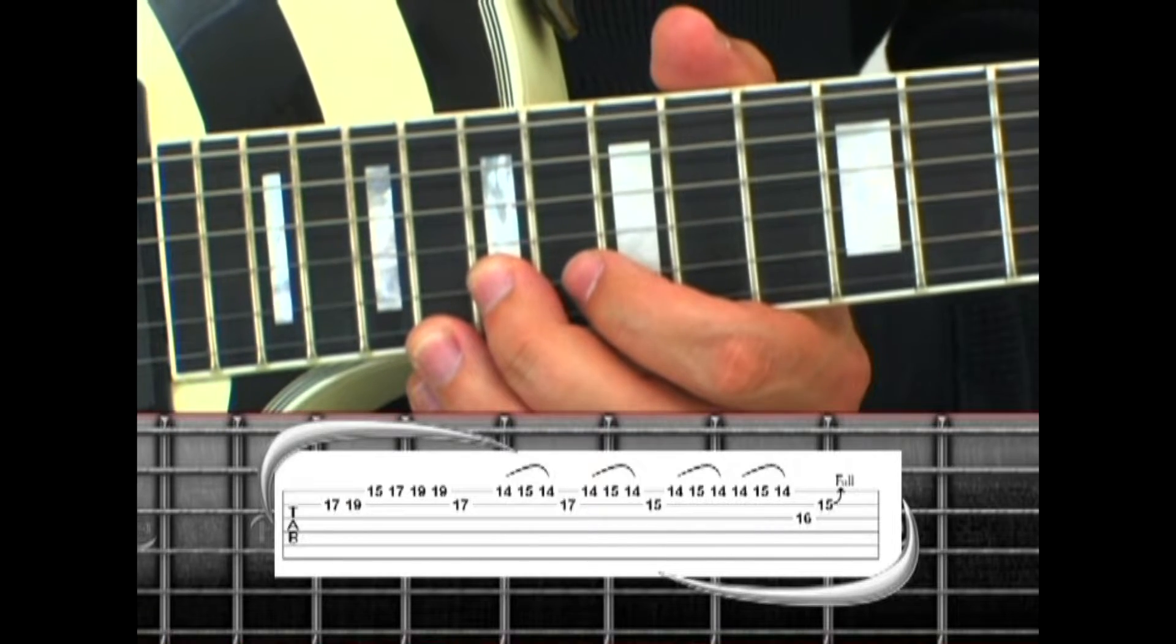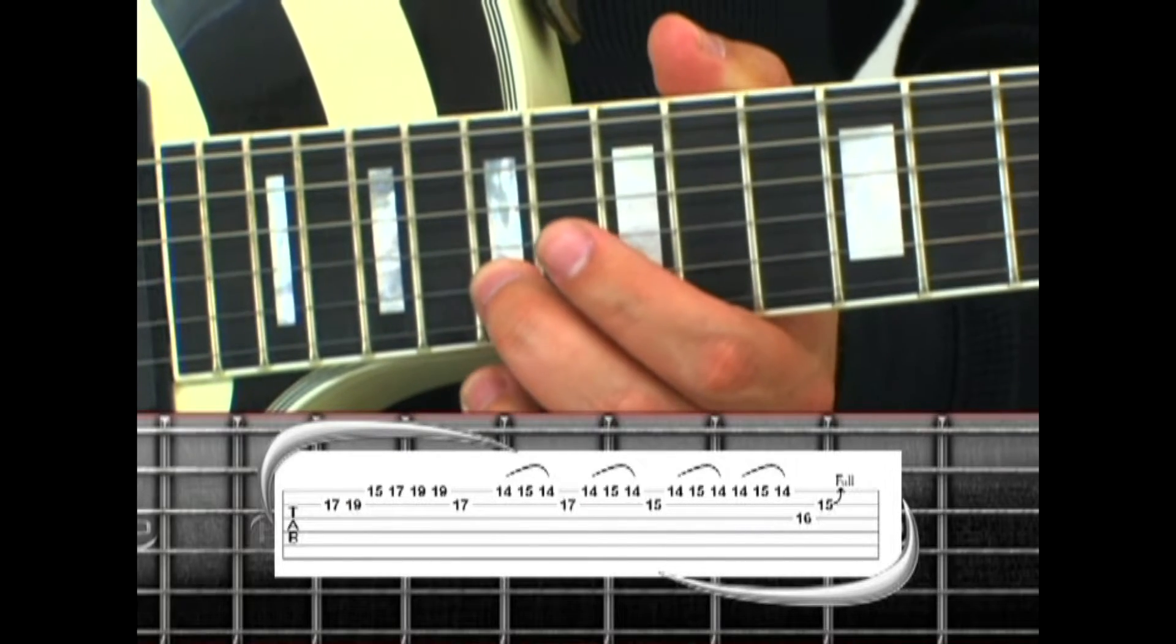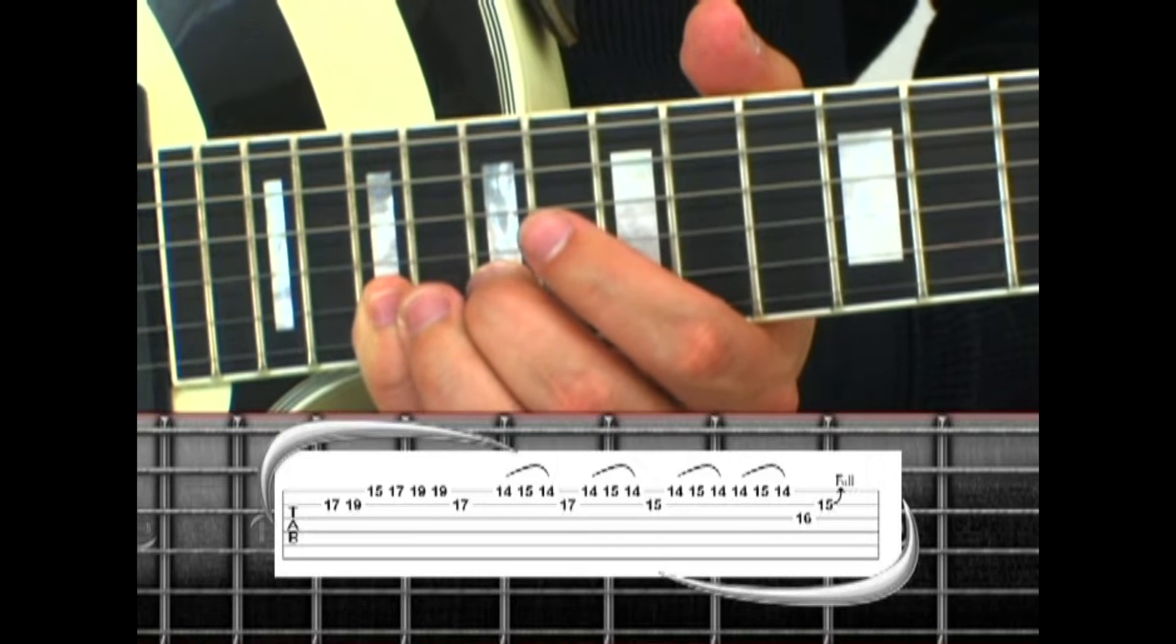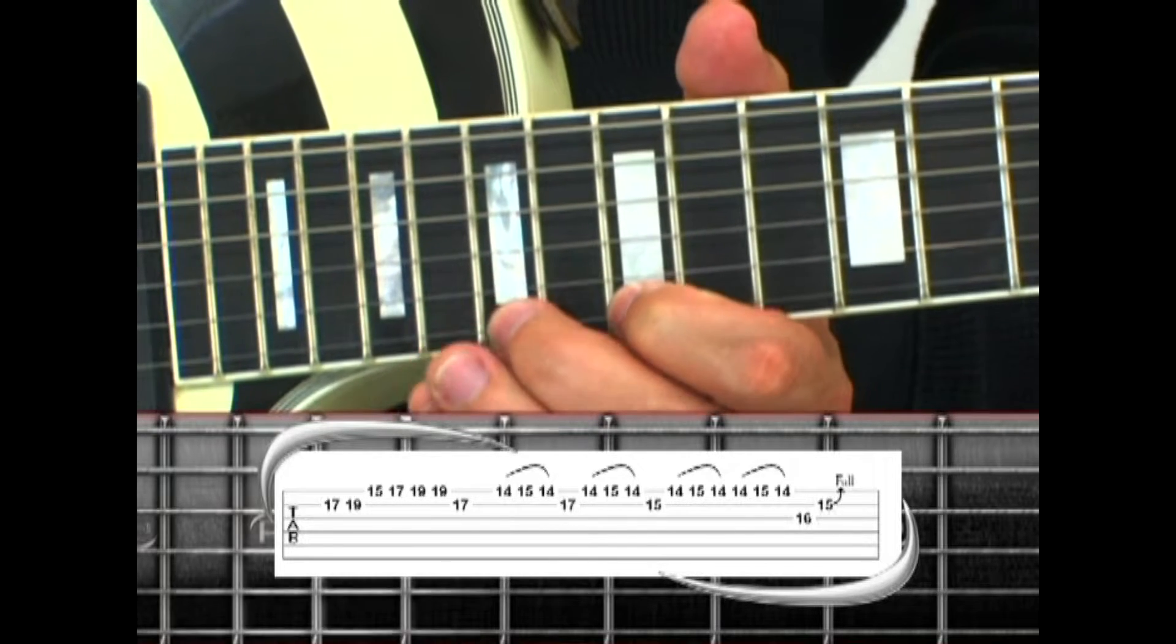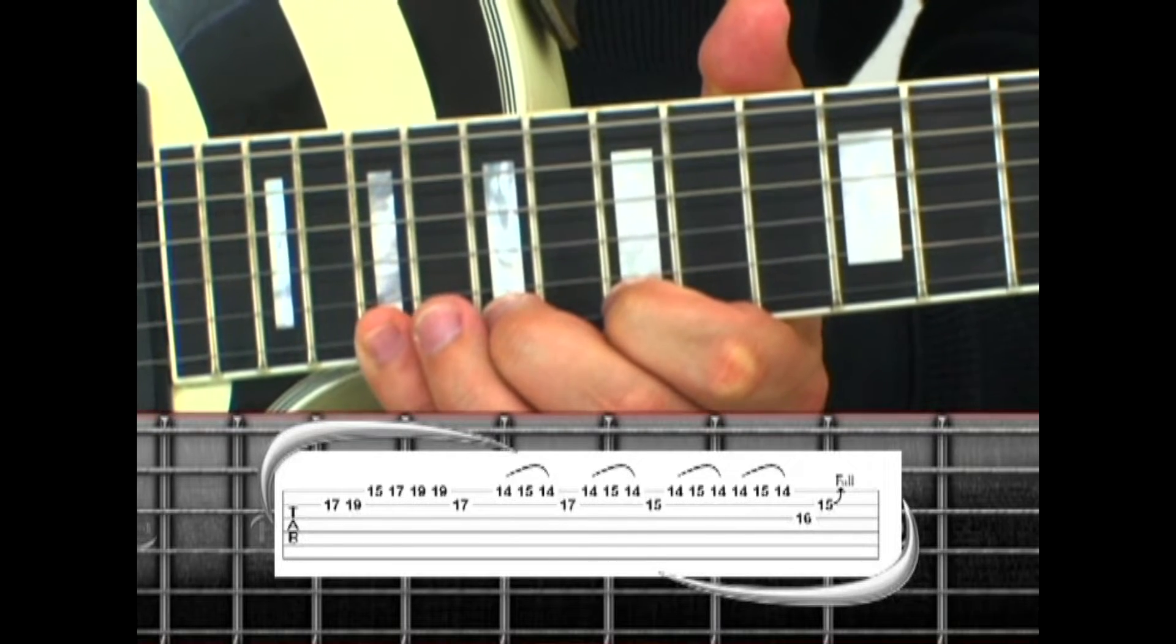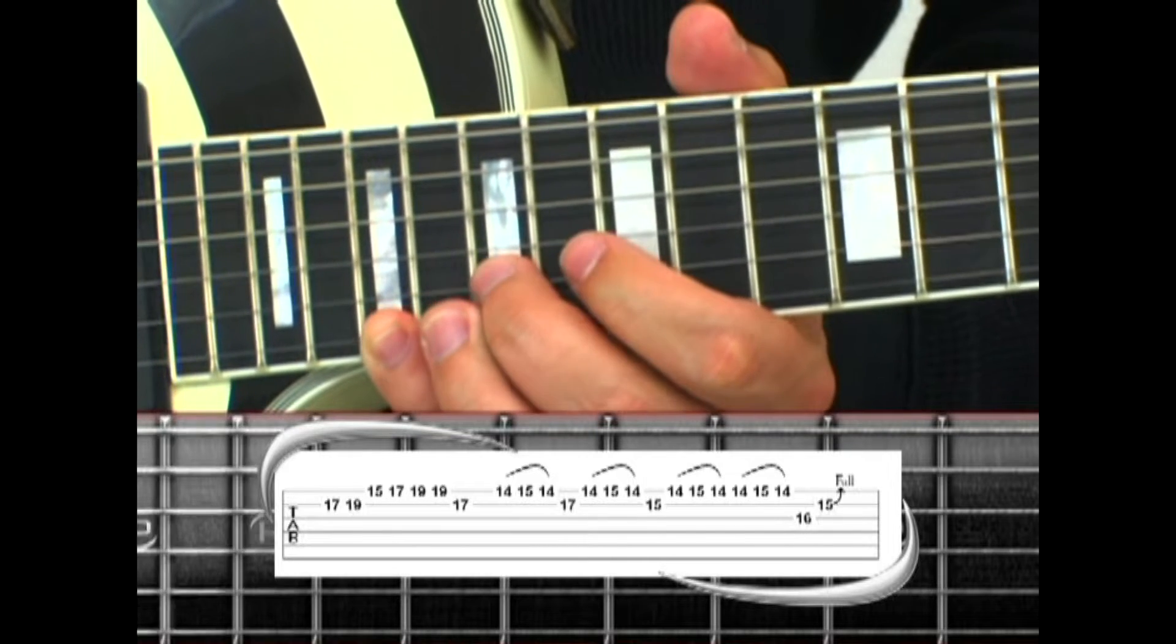Phrase 11 starts out on the 2nd string, middle finger on the 17, then 19, 1st string 15, 17, 19, 19, back to 2nd string 17.